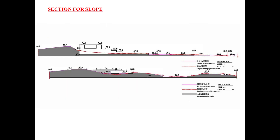Section with 4-slope: it shows the same terrain elevation with a pink line, and the original topographic elevation with a red line.